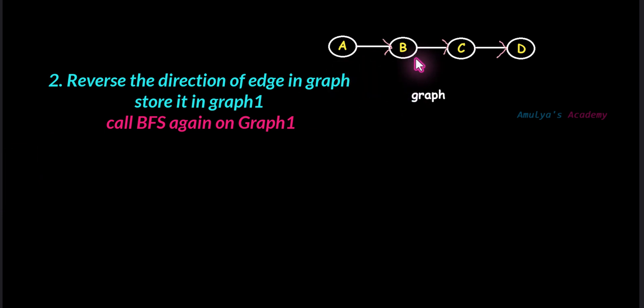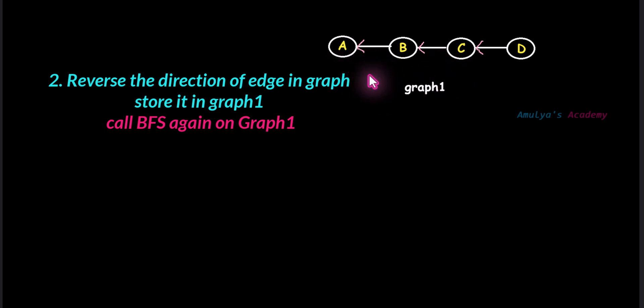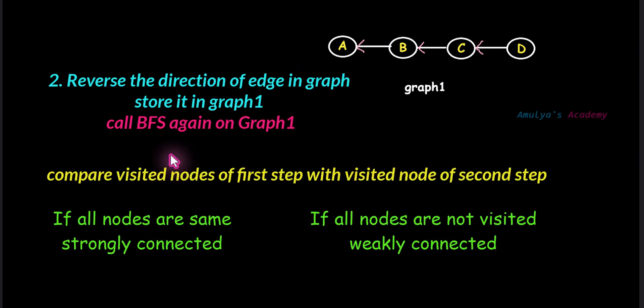Here is our graph — you need to change the direction of all the edges like this, then call it graph_one. Now apply BFS algorithm on this reversed graph, keeping the same starting node. After traversing this graph there are two outcomes: if a node is not visited, then that is a weakly connected graph. If all the nodes are visited in both graphs, then it is a strongly connected graph. If there is a path from the starting node to every other node, then there should be a path from every other node back to the starting node — if this is true, that is a strongly connected graph.